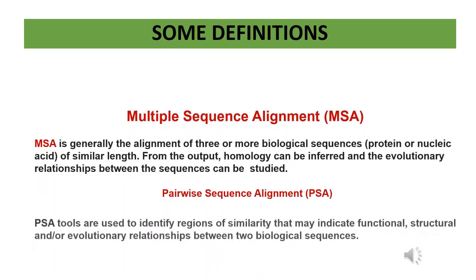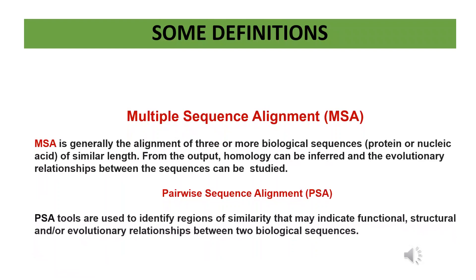Another term most commonly come is the pairwise alignment or PSA. PSA tools are used to identify regions of similarity that may indicate functional, structural, and or evolutionary relationships between two biological sequences.